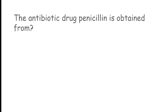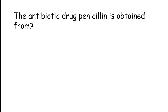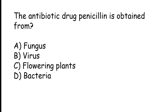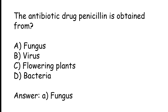The antibiotic drug Penicillin is obtained from: Fungus, Virus, Flowering plants, or Bacteria. The correct answer is Option A. The antibiotic drug Penicillin is obtained from Fungus.